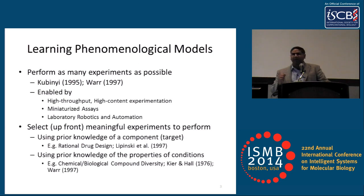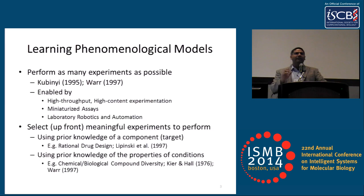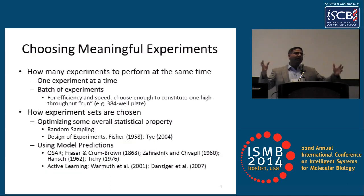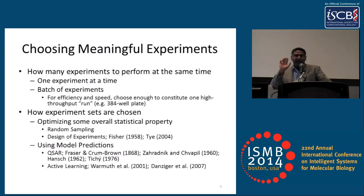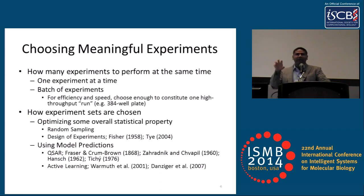Clearly, that's not always possible. There are cases where the experiment space is just way too huge. So a refinement is to try and select up front meaningful experiments to perform. This requires that you have some form of prior knowledge about the targets or conditions that lets you subselect. Once you've settled on what the experiment space is that you're going to try and learn in, we have a couple of additional tasks. The first is choosing the number of experiments we perform at a time, and critically, what experiments are performed in a set — which ones do we do at a time?